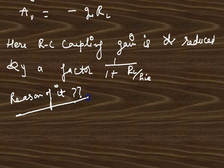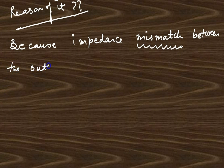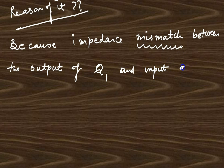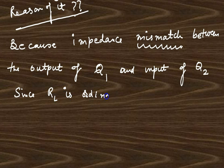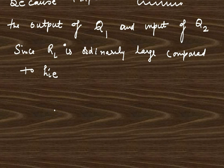The reason for this gain reduction is impedance mismatching — between the output of Q1 and the input of Q2 it is mismatched. That is why there is a loss in gain. RL is ordinarily large compared to hie, so the gain reduction of Q1 occurs.